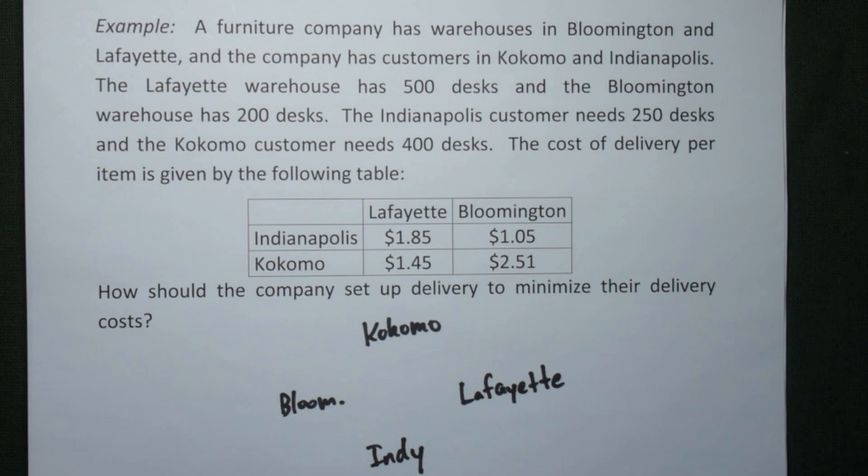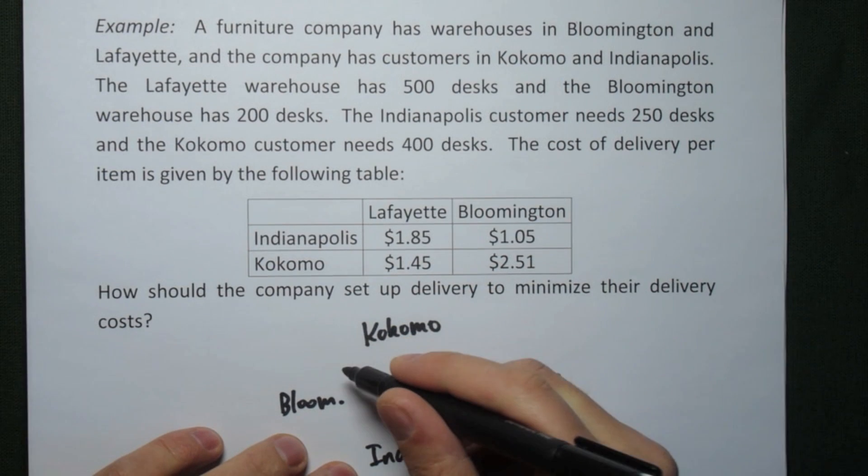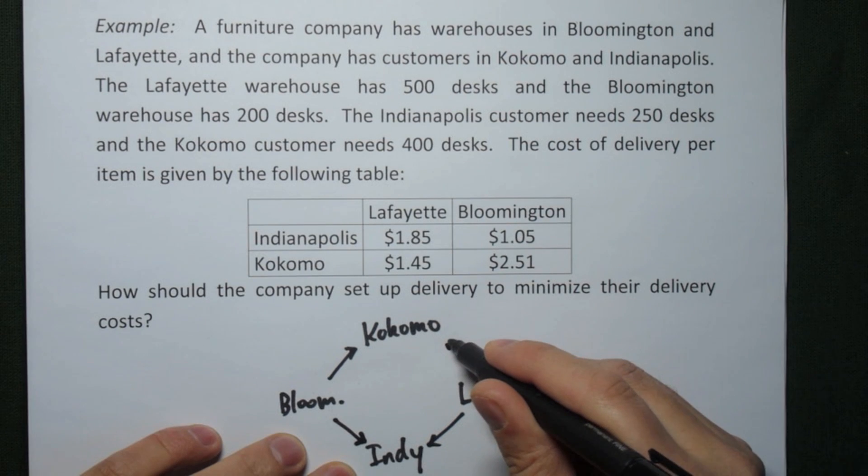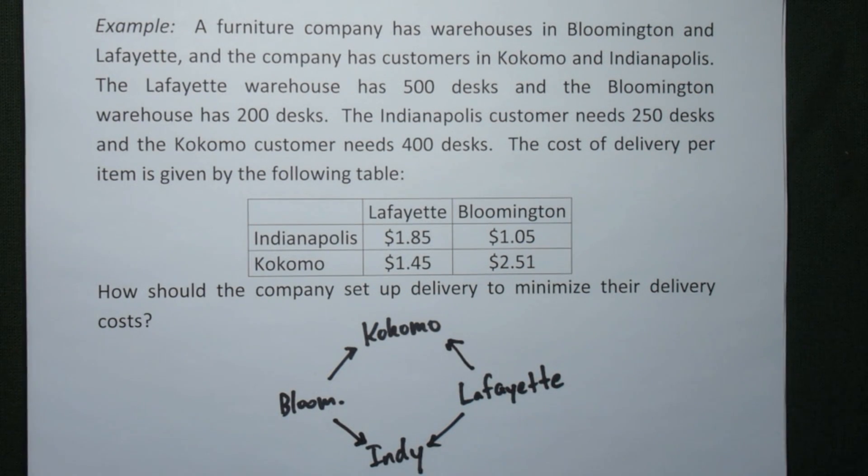To assign the variables for this problem, we have to recognize what we have freedom over, and the freedom we have in a problem like this is the amount of desks we ship from each of our warehouses. So we have Bloomington to Kokomo and Bloomington to Indy, and then Lafayette to Indy and Lafayette to Kokomo. Four different shipments, so we're going to have four different variables to work with.